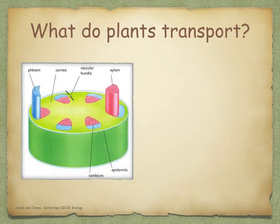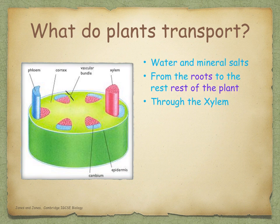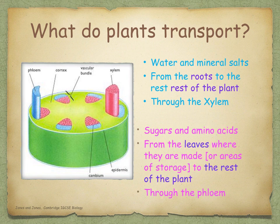Water and mineral salts are transported from the roots to the rest of the plant, and this occurs through the xylem. Sugars and amino acids are transported from the leaves where they're made, or from areas of storage, to the rest of the plant, and this occurs through the phloem.